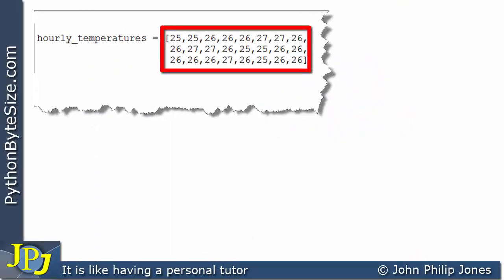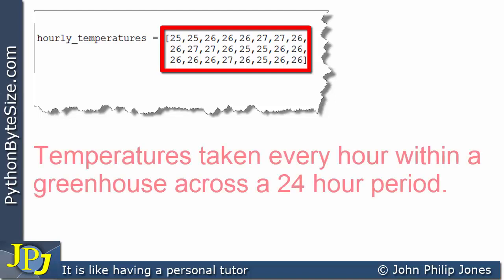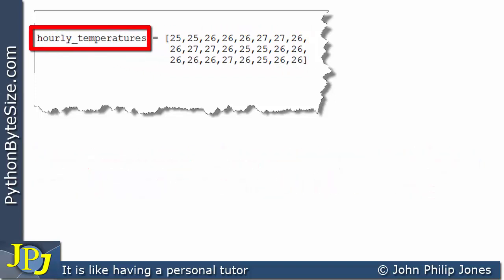Let's consider this Python list. You can see we have within the list a number of numbers, and these are the temperatures taken every hour within a greenhouse across a 24-hour period. This is the name bound to that list of temperatures.